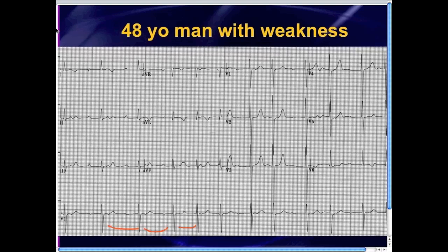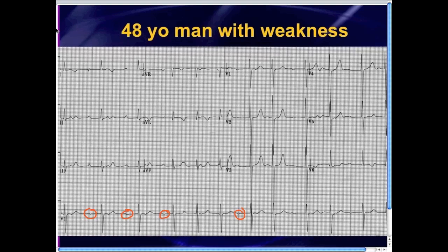The R-to-R interval is changing — it looks like it's getting shorter, and then there's another one, and then it goes back to long, and then short. The R-to-R interval is irregular. In terms of the P-waves, there's a P-wave right there, and it looks like there are P-waves there, and there, and there, but there are some other things going on. Where's the P-wave for that QRS and that QRS? Maybe there's something in there — there are little blips, and I'm not really sure what to make of those blips.